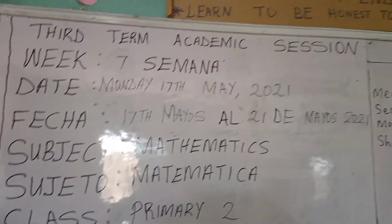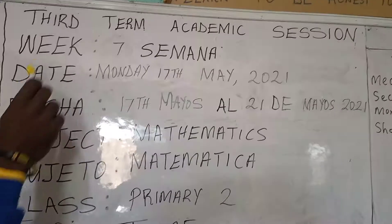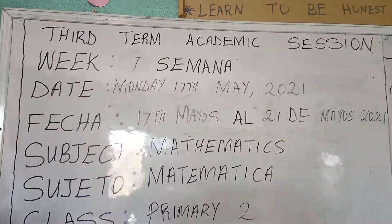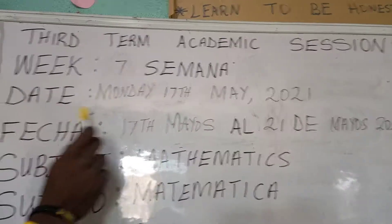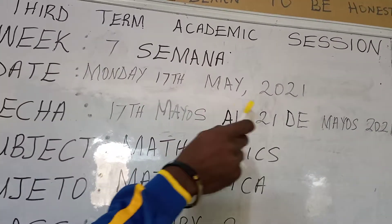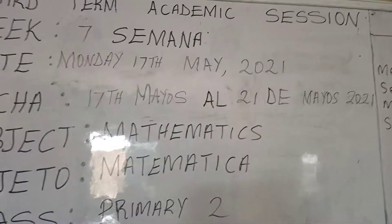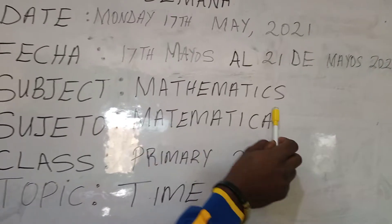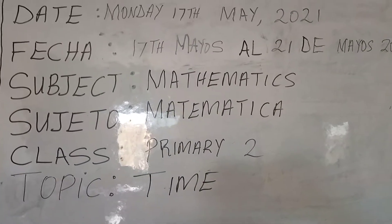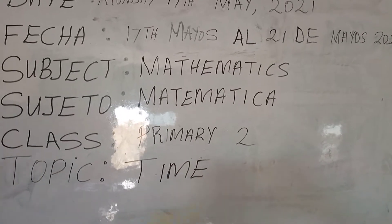Hello children, you are welcome again once more. We are on week 7. The date is Monday the 17th of May 2021. Our subject is mathematics, class primary 2.